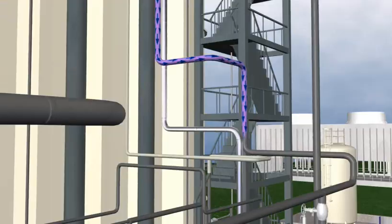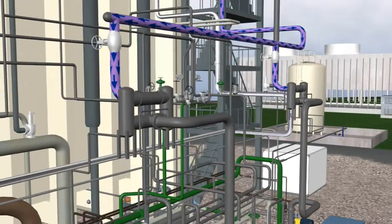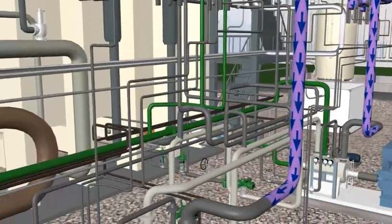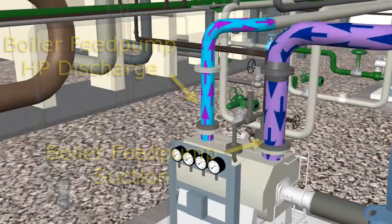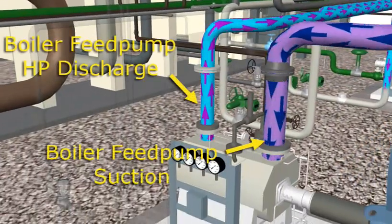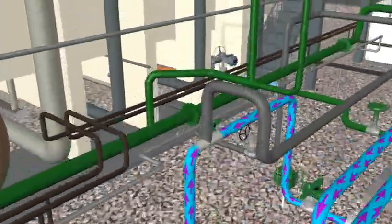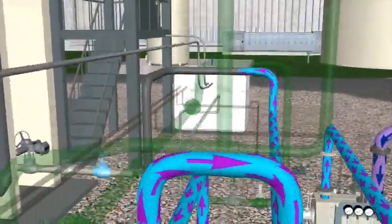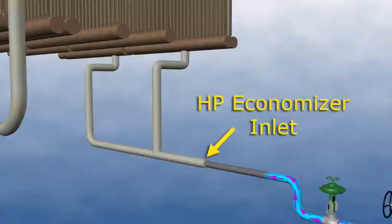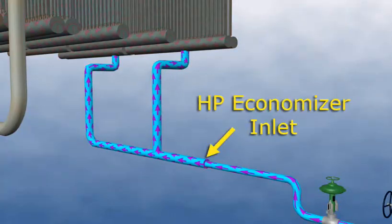The LP steam drum supplies water to the feed water pumps. Feed water is pumped from the high pressure discharge of the pump to a common header, through the HP economizers to the HP drum.